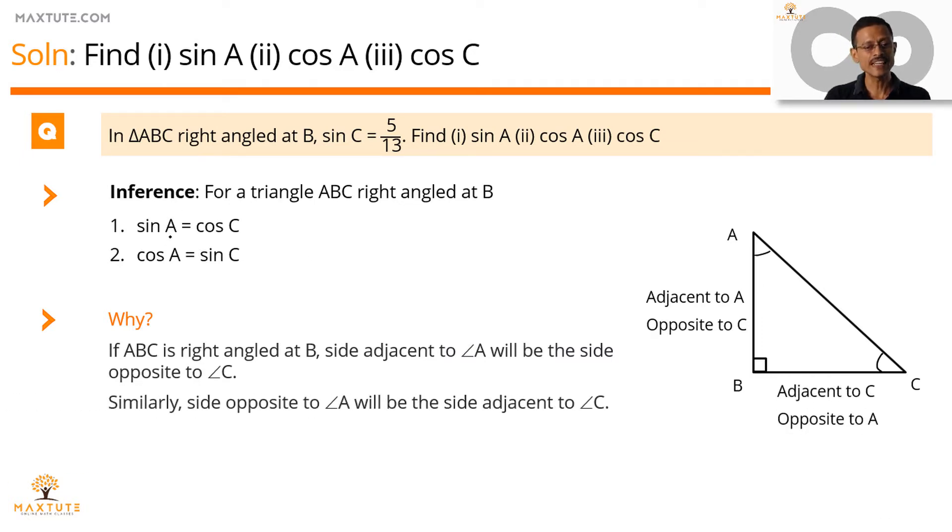So when we compute sin A, we need the side opposite to A, which is equal to BC. When we compute cos C, we need the side adjacent to angle C, which is also BC. So in both these cases, in one case, BC was the opposite side to A. In another case, BC is a side adjacent to C divided by the hypotenuse. Hypotenuse is AC common to both. Therefore, sin A equals cos C.